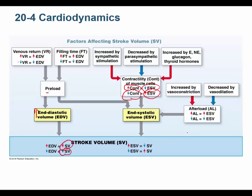Afterload is related to peripheral resistance — how hard it is to move blood through the vessels. High afterload leads to high end systolic volume and a low ejection fraction, because it's so hard to get blood into the aorta that a lot stays in the heart. Vasoconstriction and vasodilation directly affect afterload.